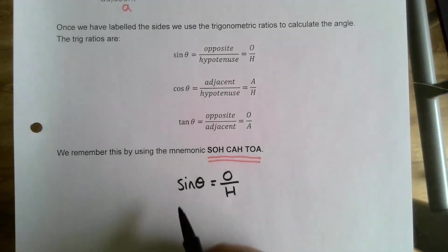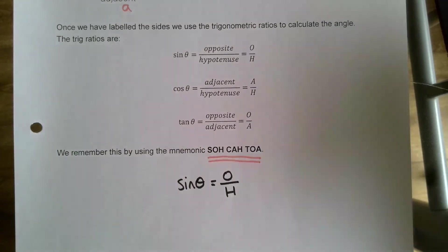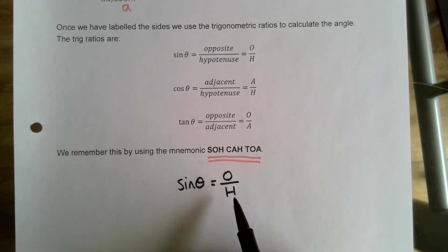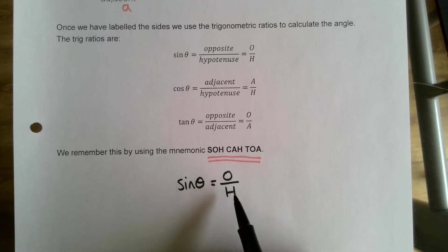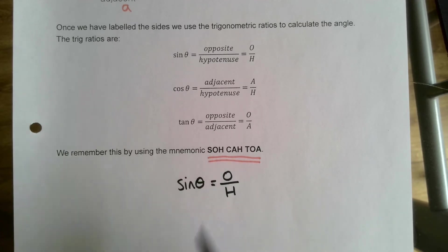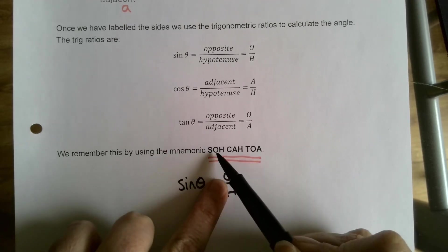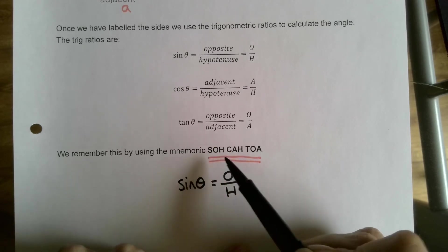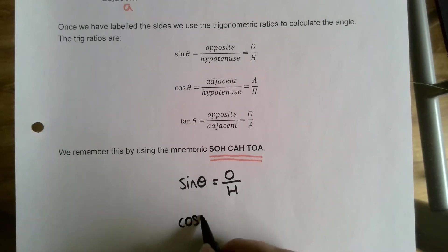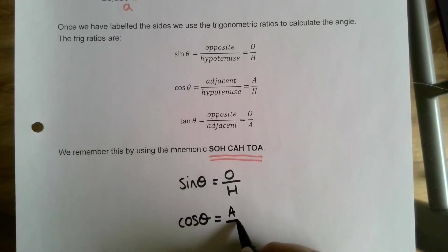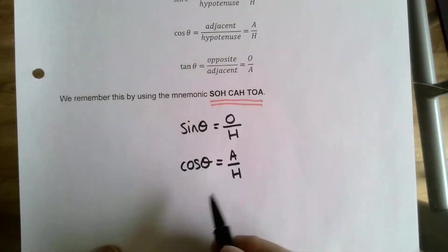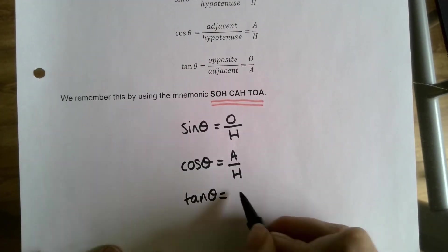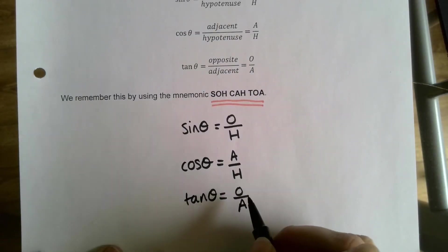Sine of the angle equals opposite divided by hypotenuse - you write it as sin θ = O/H. That's the S, O, and H. CAH tells us cos theta equals adjacent over hypotenuse - so cos θ = A/H. And TOA tells us tan theta equals opposite divided by adjacent - tan θ = O/A.